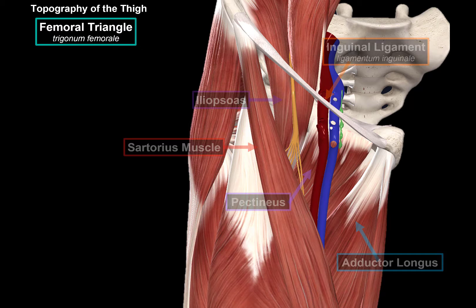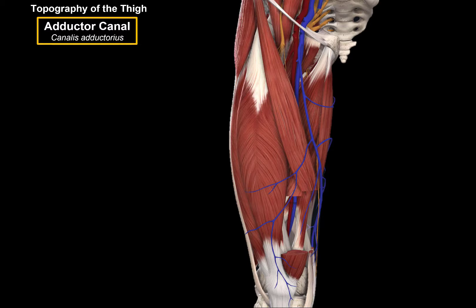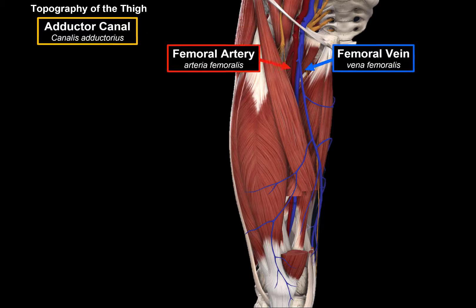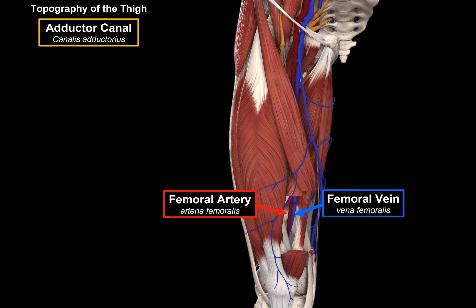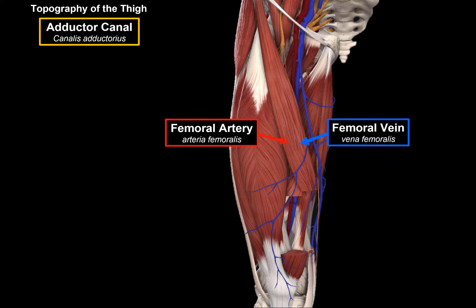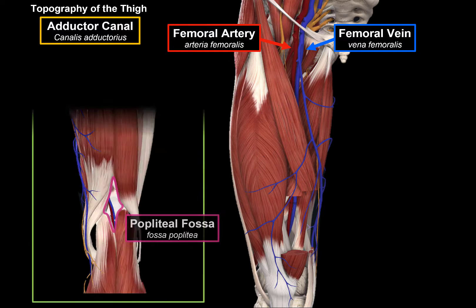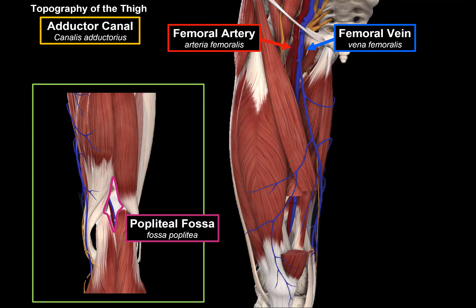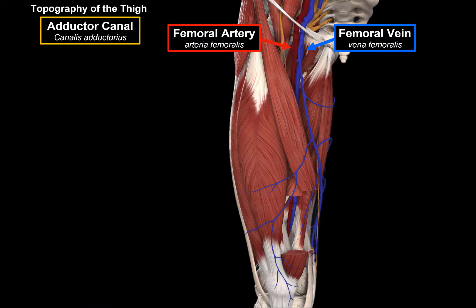Now let's cover a canal called the adductor canal. The adductor canal is a special region within the thigh that allows passage for the femoral artery and the femoral vein to run down through the thigh. Once they reach the end of the thigh, they go posteriorly into a region called the popliteal fossa, where these two vessels become the popliteal artery and the popliteal vein.